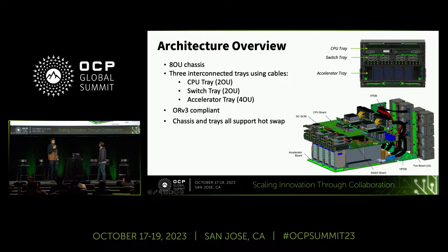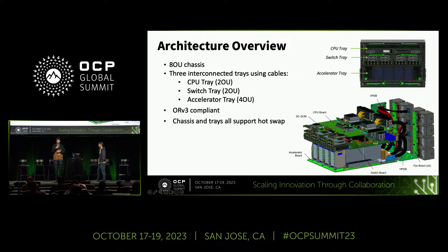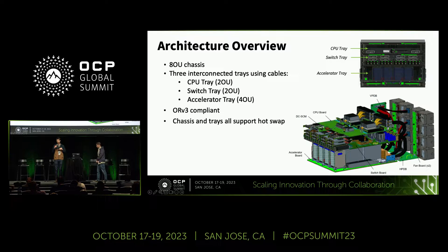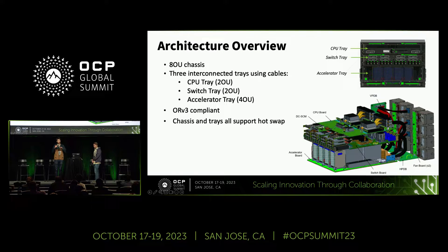Going into a little detail on Grand Teton's overall architecture — heads up, we have all our open source specs up on the OCP website, so what you see here is all in the spec with a lot more detail. This is a big 8U chassis. You can see in the picture here, sort of exploded without the sheet metal. We have three main trays visible from the front: the CPU tray, the switch tray, and the accelerator tray. The whole chassis is RV3 compliant, slides right in the rack. Out the back we have the fans and power boards, and all the trays in the chassis are hot-swappable.